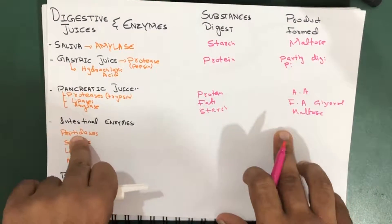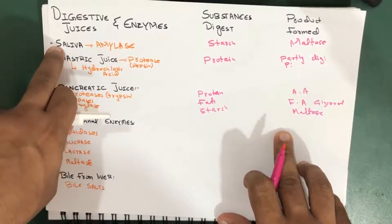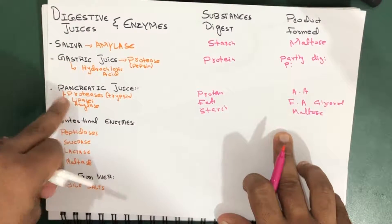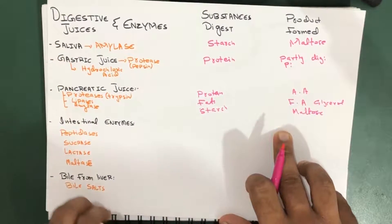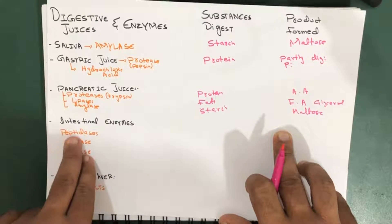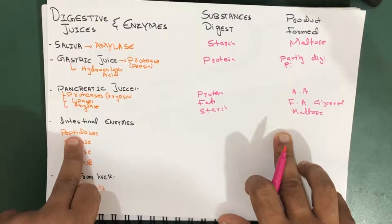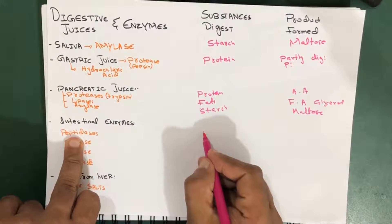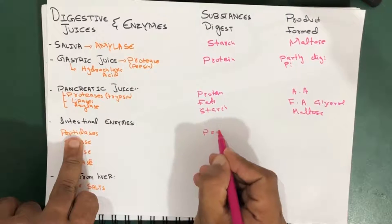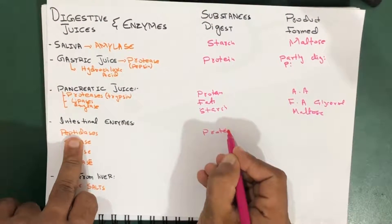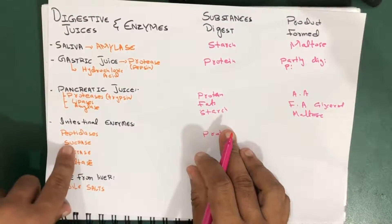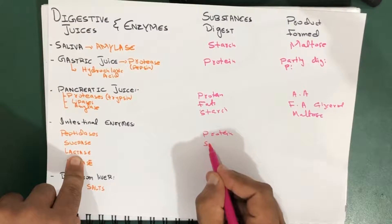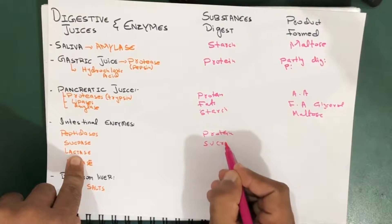Now coming to the intestinal enzymes — we've covered saliva, gastric juices, and pancreatic juices. In the intestinal enzymes, we have peptidases which actually digest protein, and sucrase which digests sucrose, which is also a sugar.